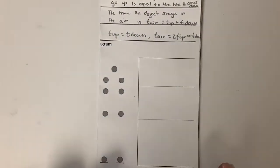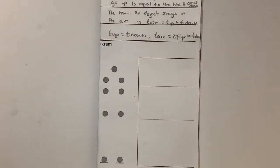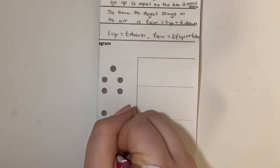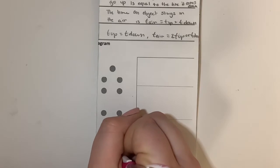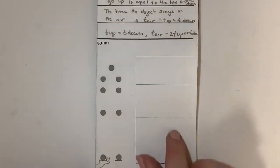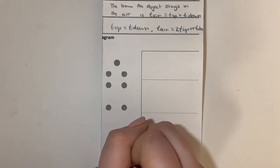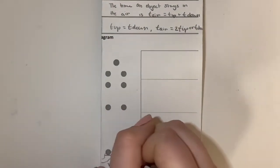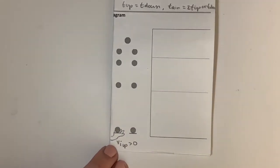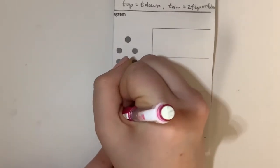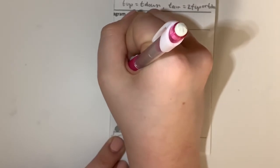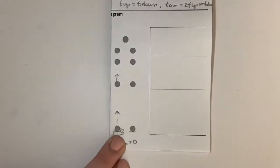So let's look at our diagram. Let's imagine these are balls and that this is a hand that I will try my best to draw, but I'm not very good at it. The initial velocity going up is always going to be greater than zero, so it's going up. And notice how my arrows are getting shorter as we're getting to the final velocity.